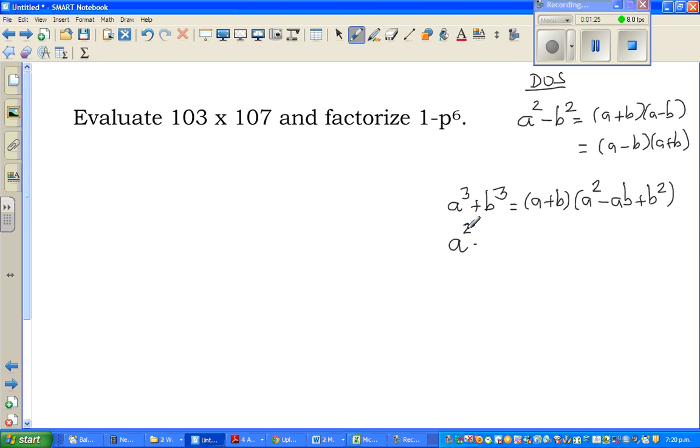If it is a cubed minus b cubed, the formula is almost the same, but slight difference. It will be a minus b times a squared plus ab plus b squared. To remember this formula is very easy. If it is a cubed plus b cubed, you put plus here and you put minus ab. If it's plus here, you have a plus here and a minus here. So if it's minus here, a cubed minus b cubed is a minus b, and as it is minus here, it's plus here.